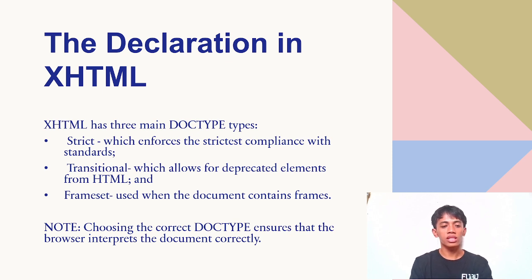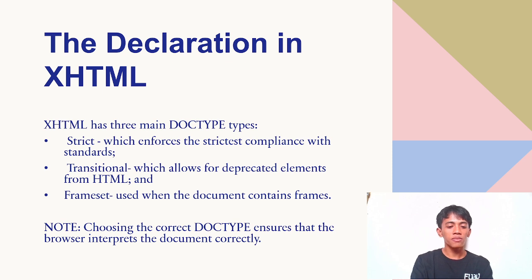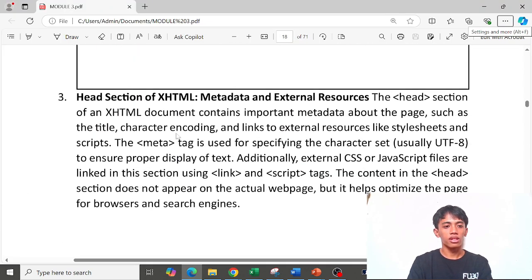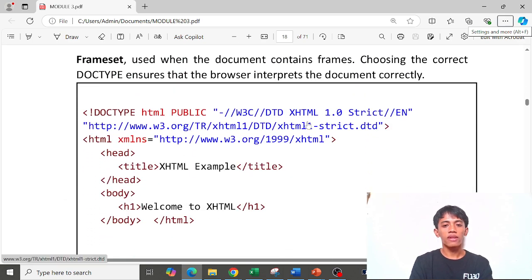Strict is the most strict. Transitional allows elements from HTML. Frameset is for documents that contain frames. Note: choosing the correct doctype ensures that the browser interprets the document correctly. Here is an example of XHTML code with the strict version and the DOCTYPE declaration.